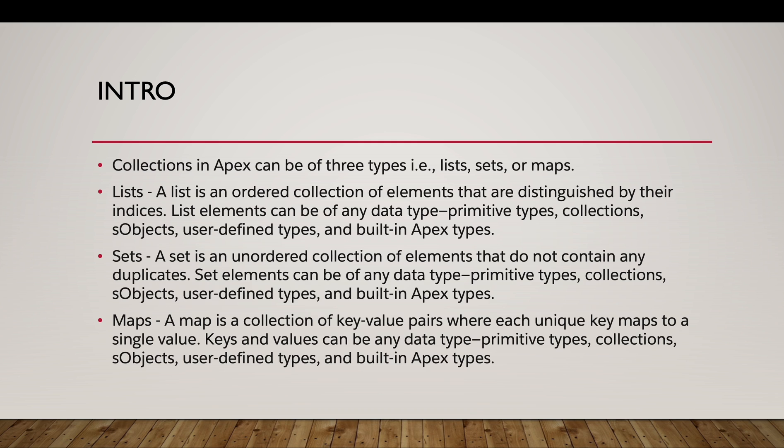List elements can be of any data type — primitive types, collections, sObjects, user-defined types, or built-in Apex types. Because a list is an ordered collection, we can access list elements using an index by providing it in square brackets.